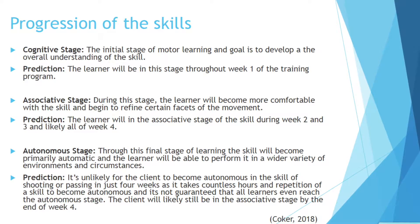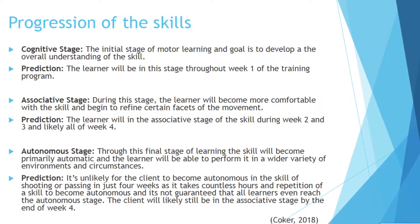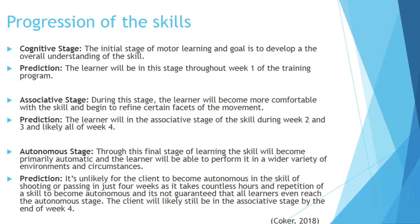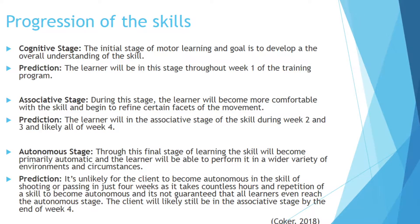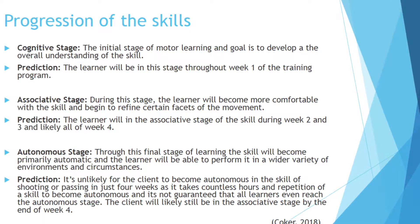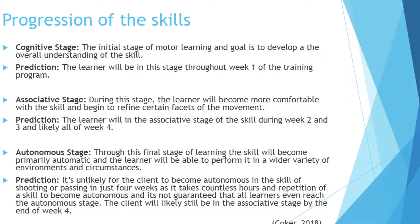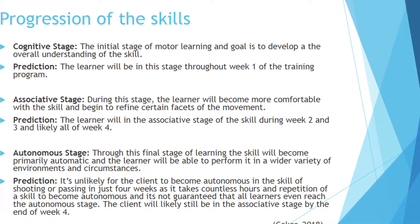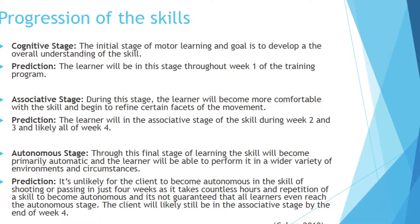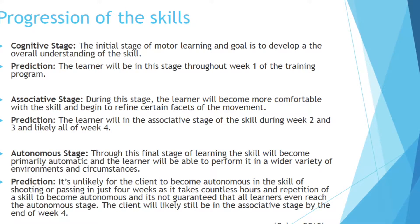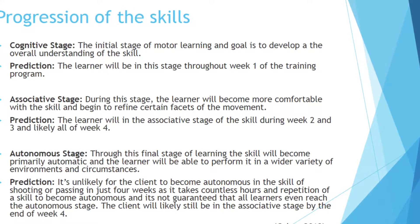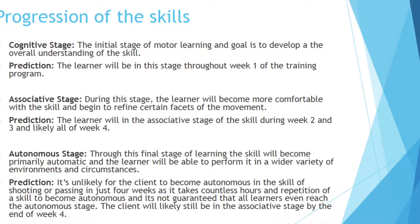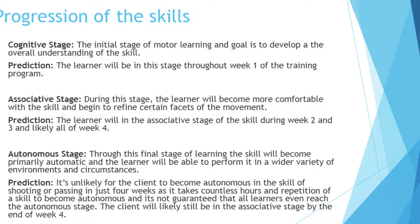In the autonomous stage, the skill becomes primarily automatic and the learner is able to perform in a wide variety of environments and circumstances. Our prediction is that it is unlikely the client will be autonomous in shooting or passing in just 4 weeks, as it takes countless hours of repetition to become autonomous and it is not guaranteed that all learners even reach the autonomous stage. The client will still likely be in the associative stage by the end of week 4.